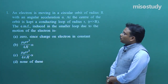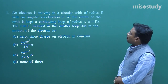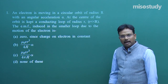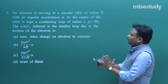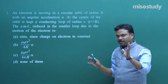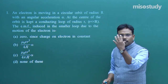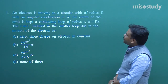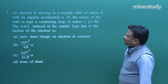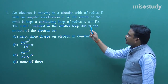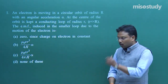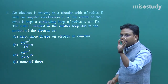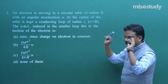An electron is moving in a circular orbit of radius capital R with angular acceleration alpha. This line requires no further explanation — visualization is very easy. At the center of the orbit is kept a conducting loop of radius small r. I think I should draw a diagram after reading this line.